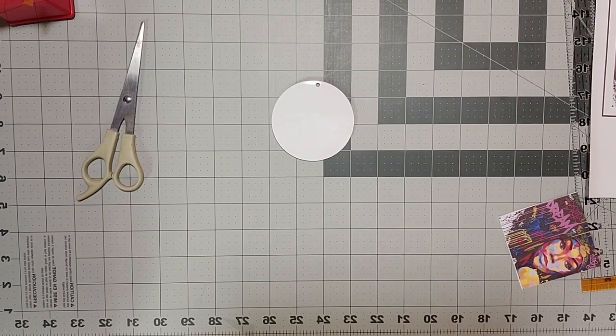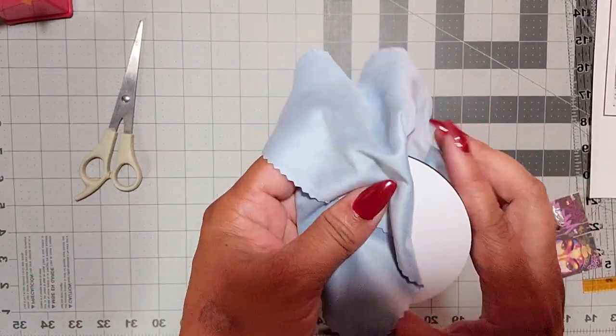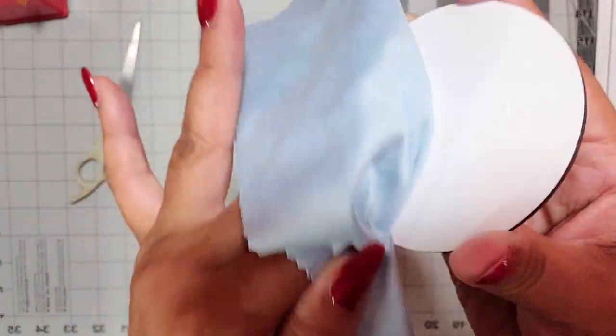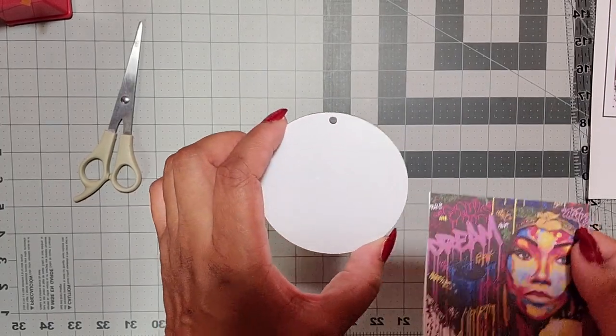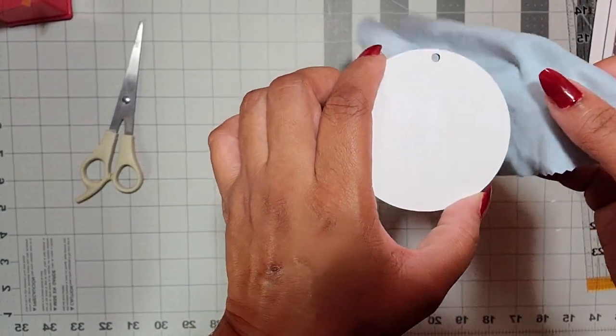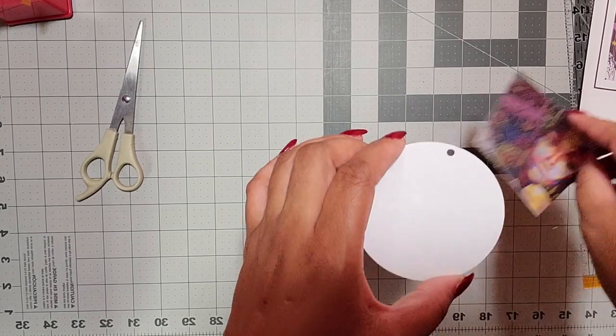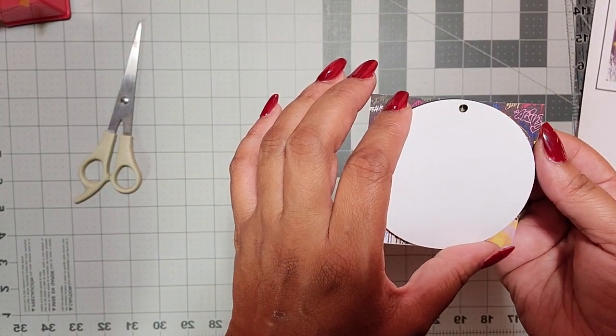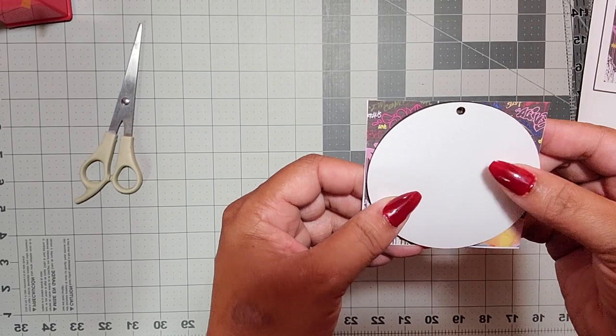Alright, so when you sublimate your images, when you print out your images on sublimation paper, and I'll have to leave the sublimation paper type that I use in the description as well, make sure that you flip your image or mirror your image when you print it out so that it prints on the right side. My image here on the video is actually flipped and mirrored. So what you would actually be seeing is a flipped image. And you'll also notice that when you print out on sublimation paper, it looks pretty dull. But that is just the nature of it. Once the heat gets to it, the colors become vibrant.